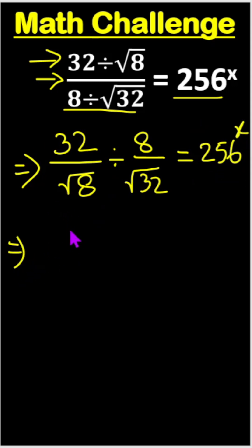Once a fraction divide another fraction, that time fraction will be flipped, right? So first fraction 32 divide root 8 will be unchanged and here times it will become root 32 divide 8, okay?